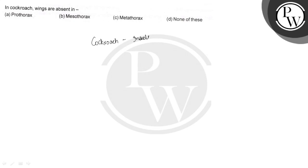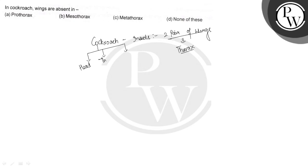The question is: in which segment are wings absent in the cockroach? The cockroach is an insect, and insects are categorized by two pairs of wings. In cockroaches, the wings are present in the thorax region. The body is divisible into three regions: head, thorax, and abdomen.